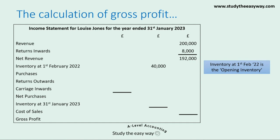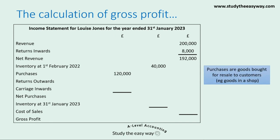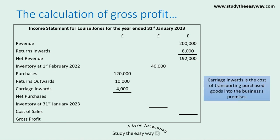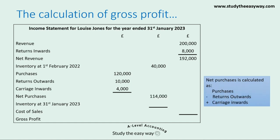Next we put in the middle column a figure for the inventory at the start of the financial year — this is often called opening inventory. Next we move on to purchases, which are shown in the left hand column. Purchases are goods bought for resale to customers. Returns outwards, which used to be called purchase returns, are the goods being returned to a supplier. Carriage inwards is the cost of transporting the purchased goods into the business's premises. These three figures are all shown in the left hand column. Using these three figures we now calculate net purchases, shown in the middle column. It's calculated as purchases minus returns outwards plus carriage inwards.